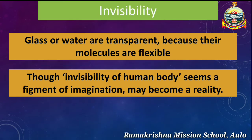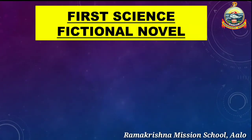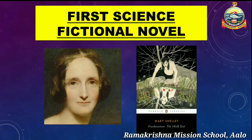Science fiction deals with futuristic concepts — for example, invisibility. According to science, glass or water are transparent because their molecules are flexible, they are not rigid, whereas the human body cannot be transparent. Though invisibility of the human body seems a figment of imagination, it may become a reality — and this imagination is science fiction. Do you know what was the first science fictional novel in English literature? It was Frankenstein, written by Mary Shelley.